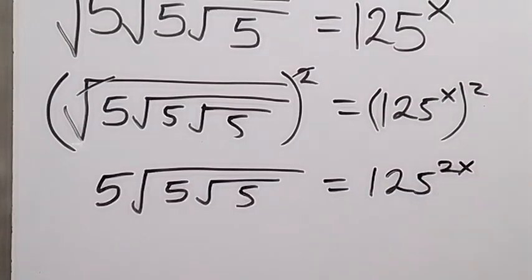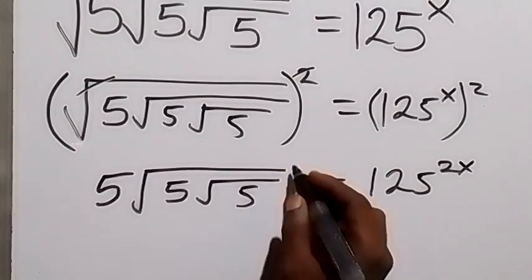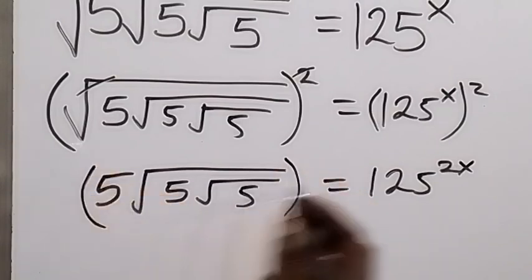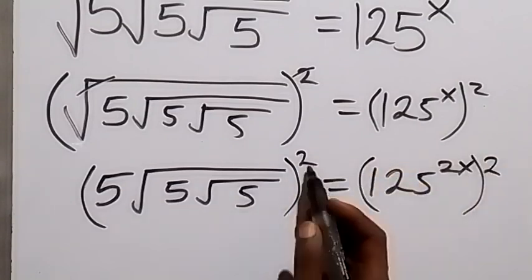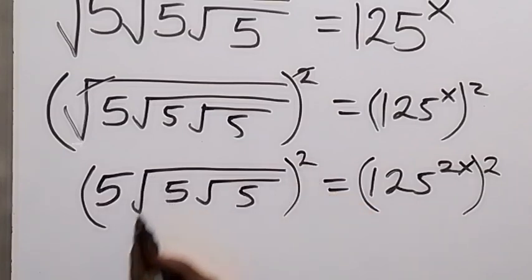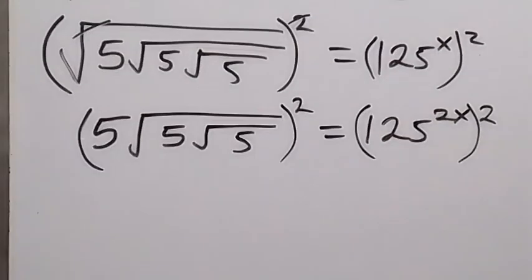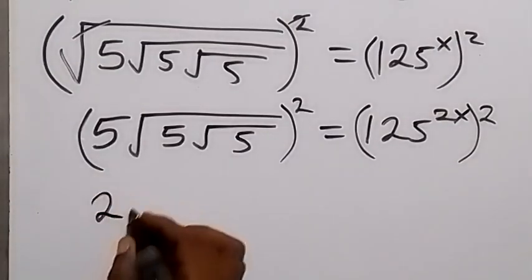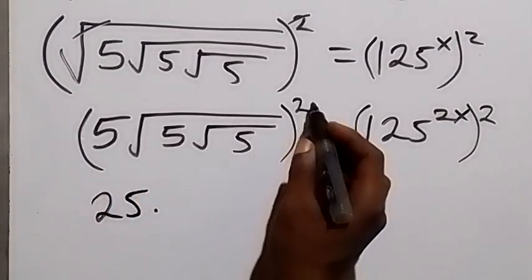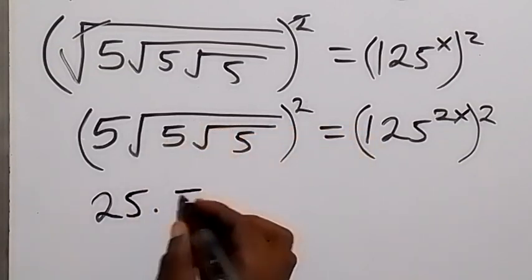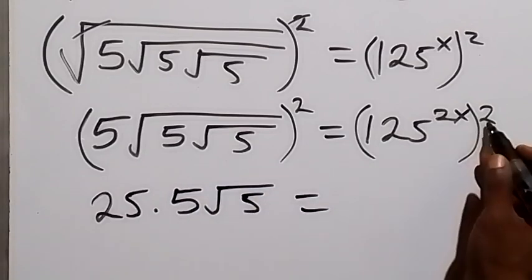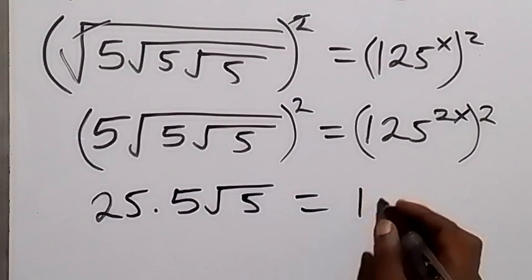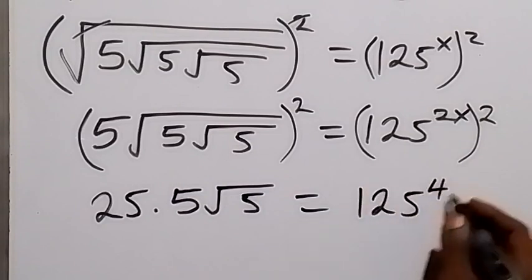From here we can also square both sides again. When we square this side we have everything squared, and we square the other side as well. This square affects 5 and the square root — 5 squared gives us 25 — then multiplied by the square root cancellation that leaves root 5, equals to 125 raised to power 4x.